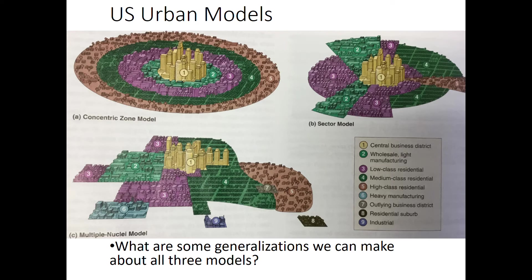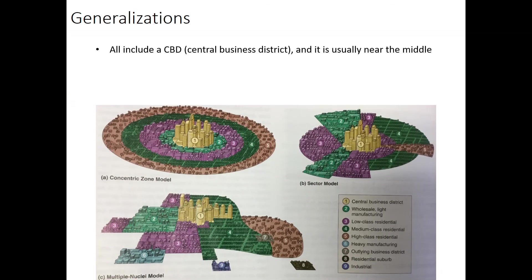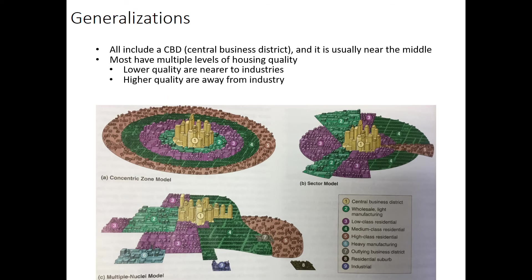That makes sense — if you're rich or medium-income, you'd probably choose to move away from a factory. The middle-income people are, understandably, in the middle, often between the low- and high-class residents. We've found a couple simple generalizations: the central business district tends to be in the center, low-class housing tends to be by factories, and upper-class housing tends to be far away from lower-class housing and the factories. That makes these models a little bit easier to digest. All we've got here are different shapes or different logic for how they ended up getting those shapes.